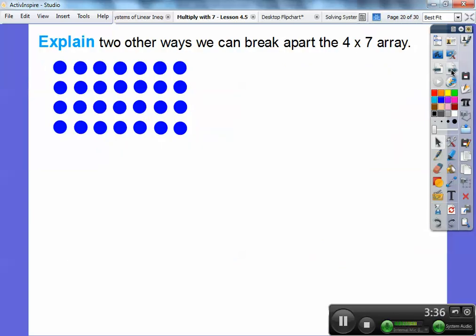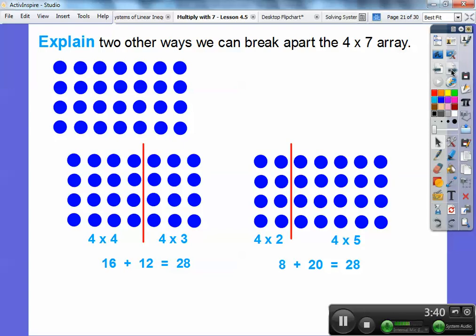Explain two other ways we can break this array apart. I can break this array into four by four and four by three. Here's my seven right here, except my seven is four plus three. Or, I can do two plus five and do it the commutative way and do two first and do five first. I could do one and six if I wanted to. Four times four is sixteen. Four times three is twelve. Sixteen plus twelve is twenty-eight. Here this is eight. Eight plus twenty is also twenty-eight.